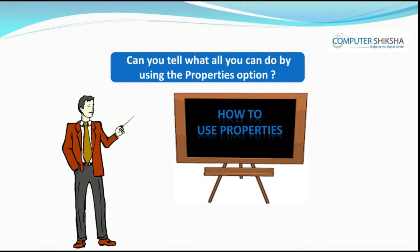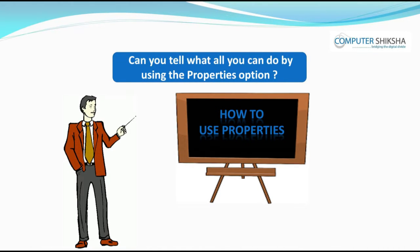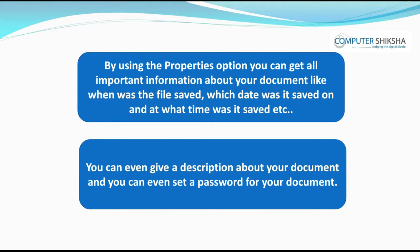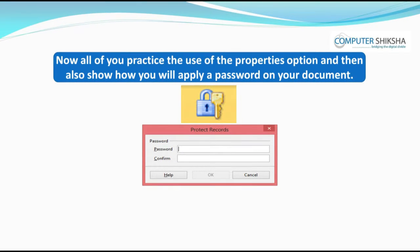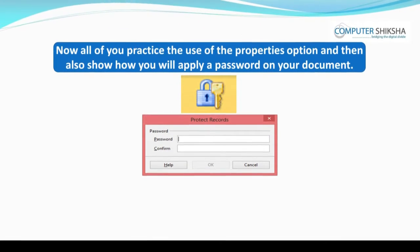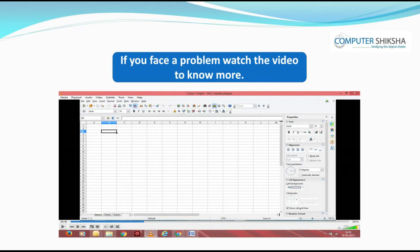Can you tell what all you can do by using the Properties option? By using the Properties option, you can get all important information about your document, like when was the file saved, which date it was saved on, and at what time it was saved. You can even give a description about your document and set a password for it. Now, all of you practice the use of the Properties option and show how you will apply a password on your document. If you face a problem, watch the video to know more.